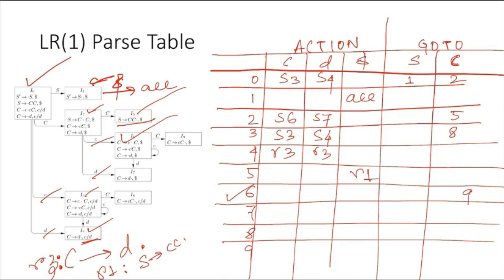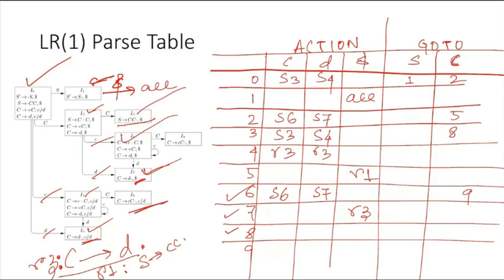In state I6: for capital C it goes to I9, so we put 9. For small c there is a self-loop, so shift 6. For small d it goes to state I7, so shift 7. There is no reduction. In state I7 we have the reduction C → D dot, which is R3 again, but this time the look-ahead is dollar, so R3 goes in the dollar column.